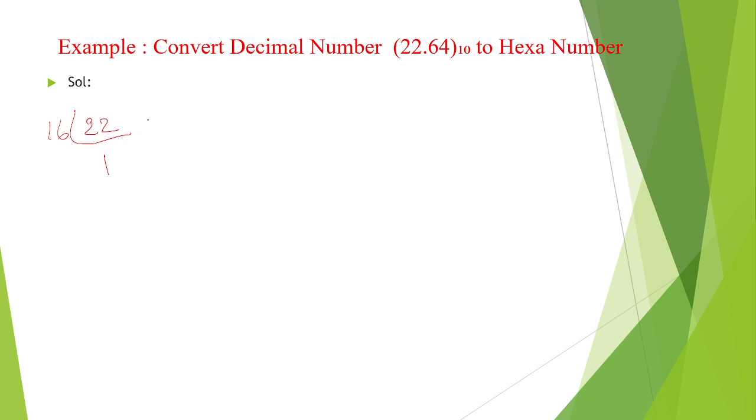That is one time, and 6 is remainder. So this is an LSB, least significant bit, and this is an MSB, most significant bit. So therefore, we can write it as 22 decimal equal to 16 hexadecimal.